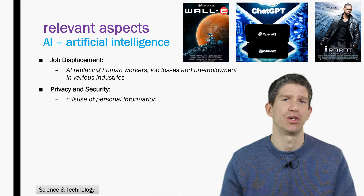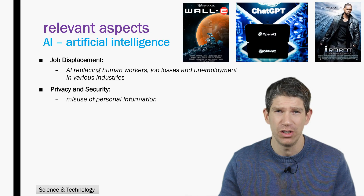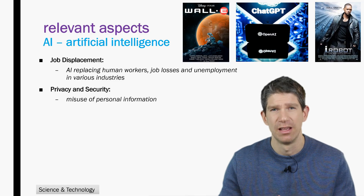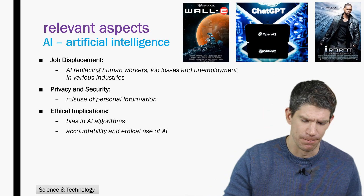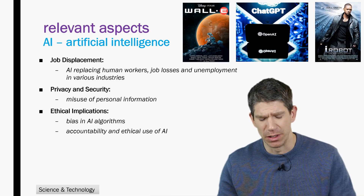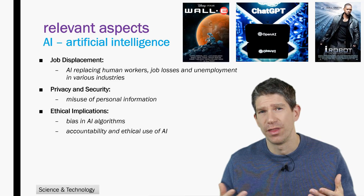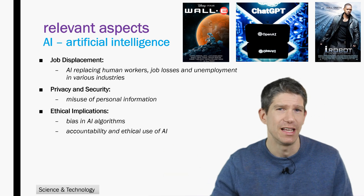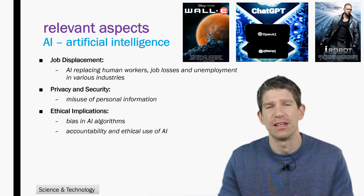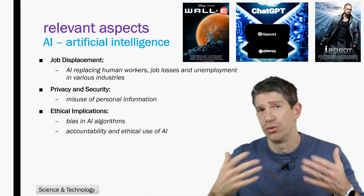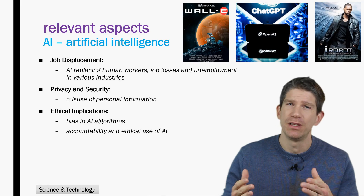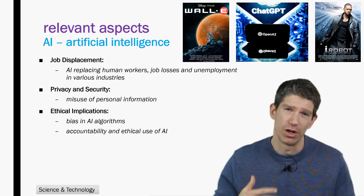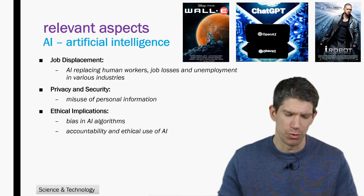There is also the issue of privacy and security. AI can sort through lots of data very quickly. You may have heard about the facial recognition software that China uses — this is all made possible by AI. There are other ethical implications too. It has been shown that artificial intelligence tends to have a bias depending on the data set it has been trained on. An AI sorting through job applications could discriminate by gender or race when selecting people for job interviews, which would be a big problem.